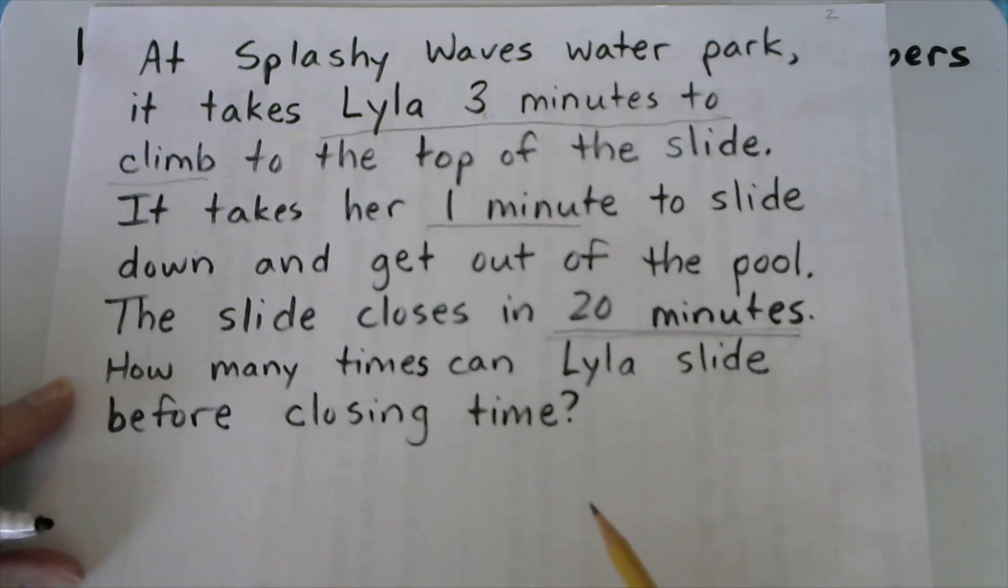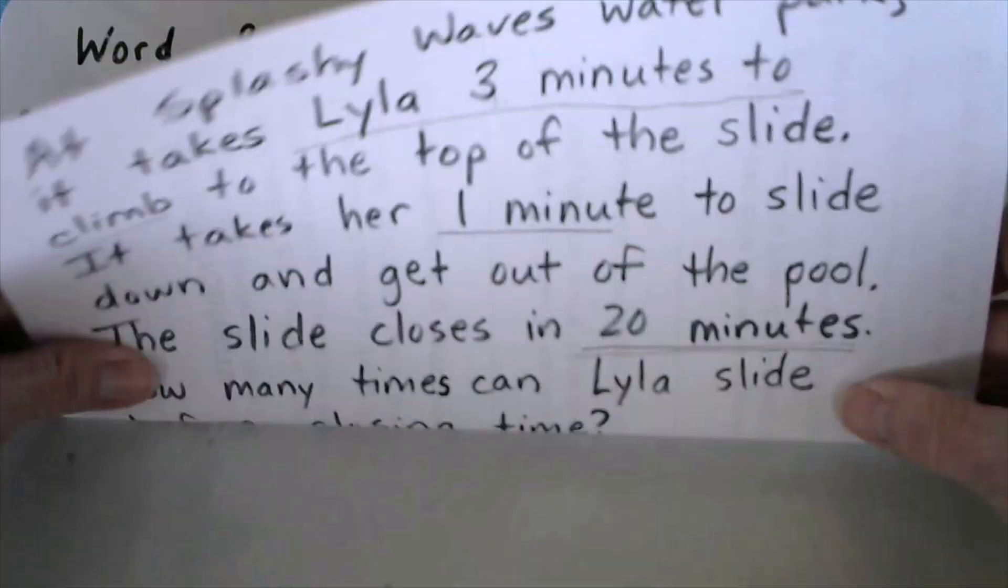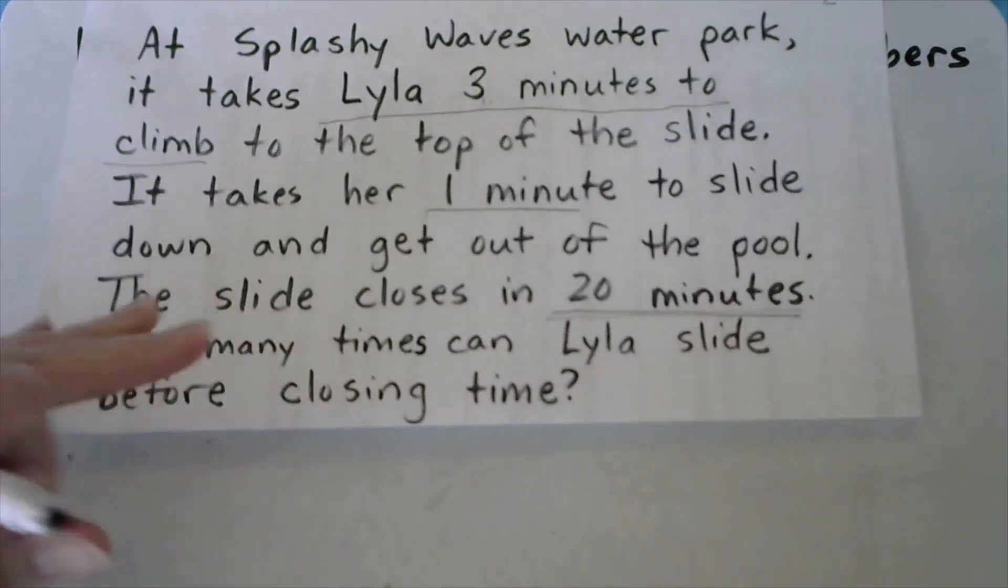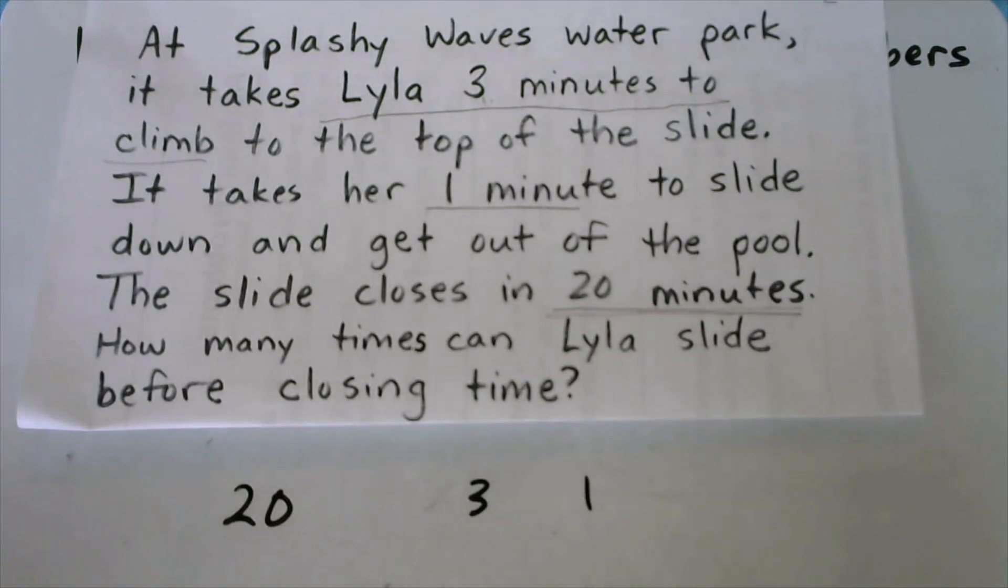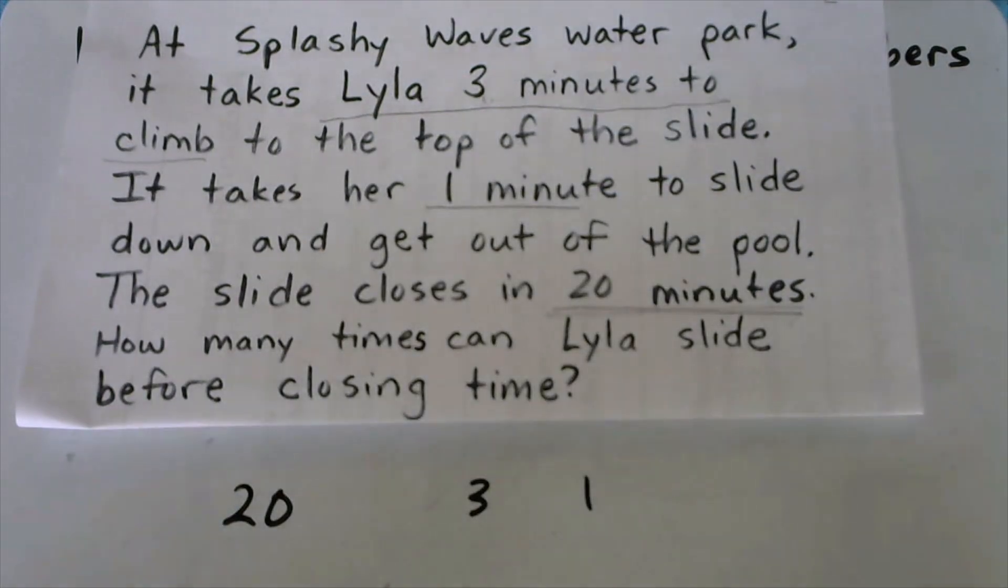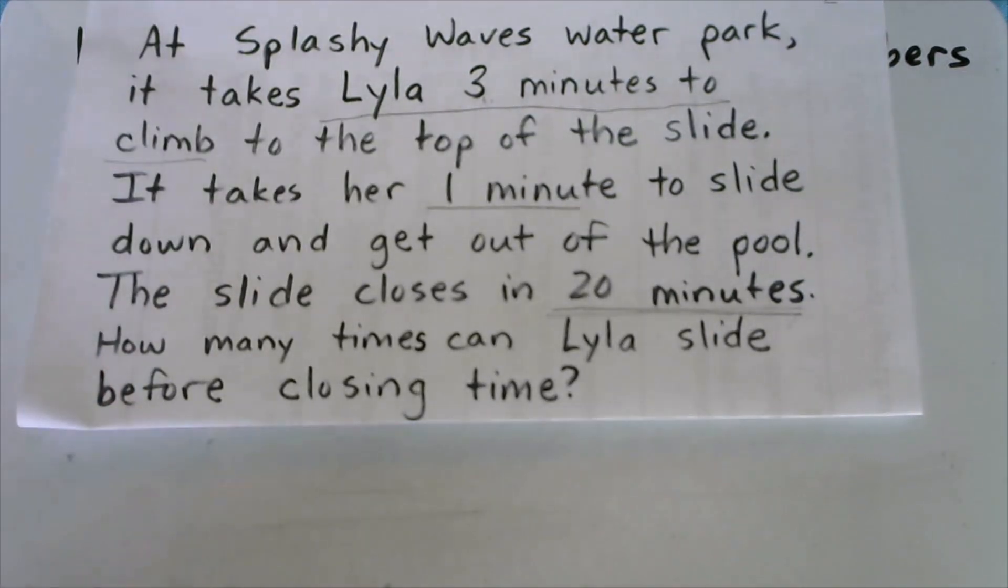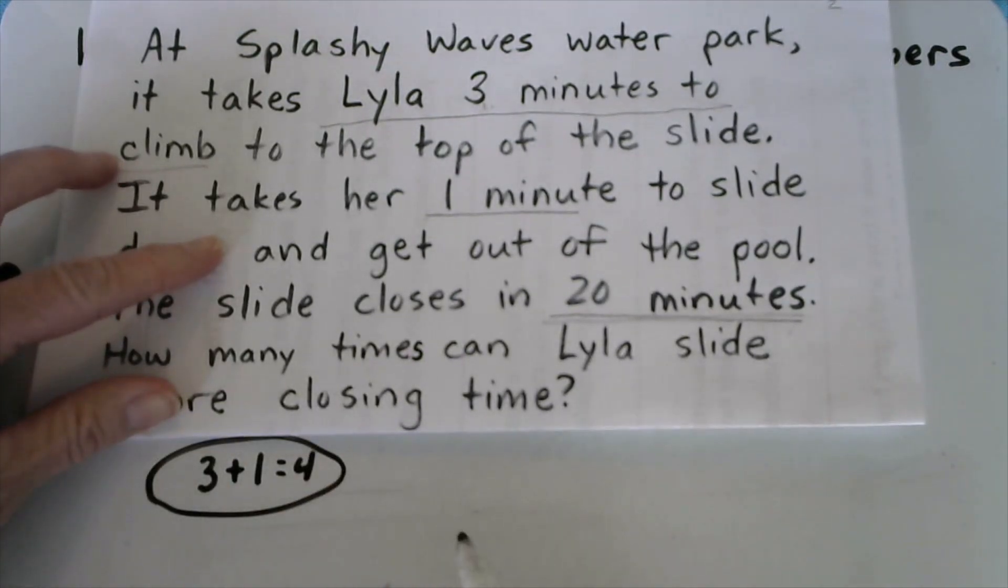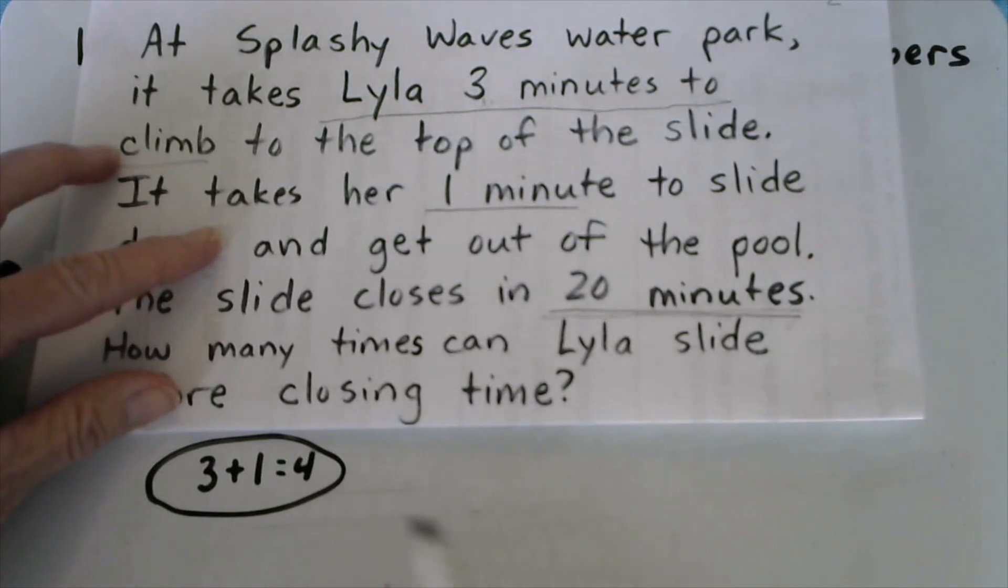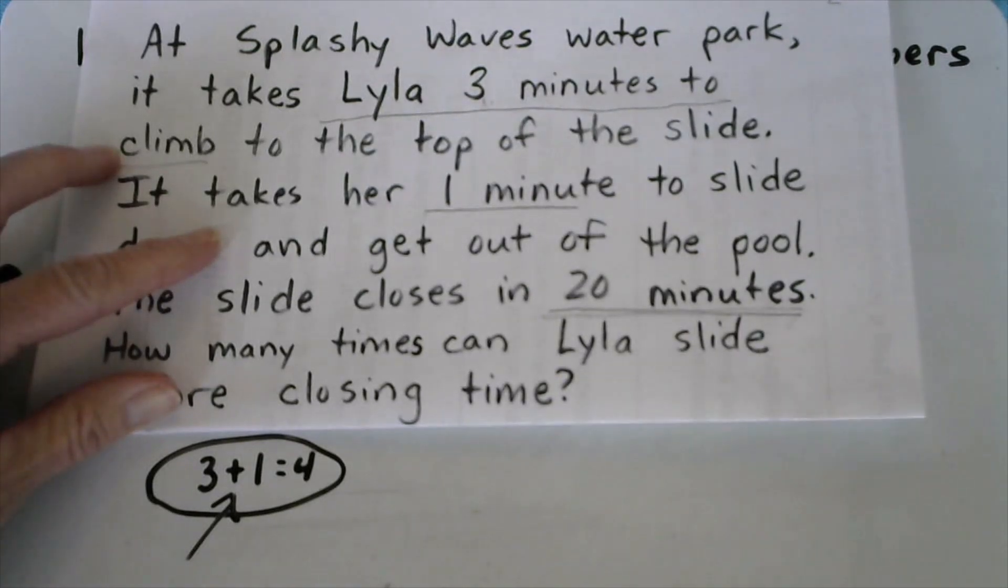Well, let's make a plan. I could take my 20 minutes and I could start trying to cram in as many 3s and 1s as I can. A number plucker would do it that way. But let's think about it. Lila has to do both things to slide. She has to climb and slide and get out before she can start the next round of sliding. So really, each turn on the slide takes 4 minutes because you have to climb to slide. So pause the video and you're solving to find out how many times can Lila do this complete task in the 20 minutes she's got left before closing time.